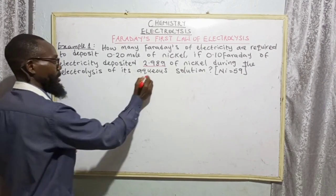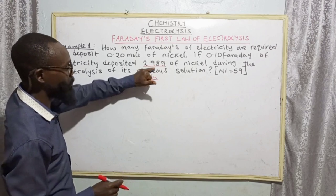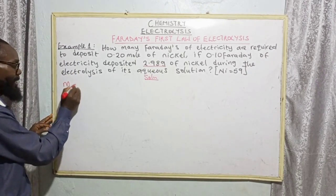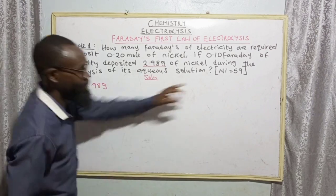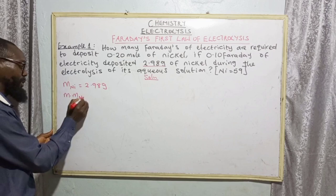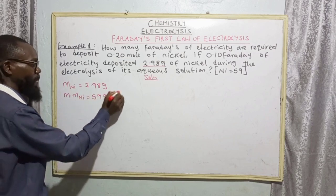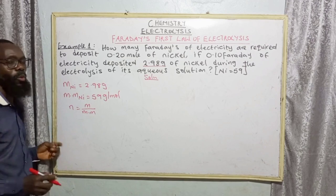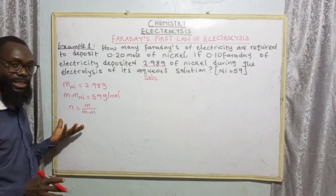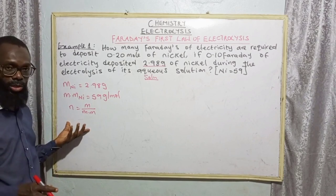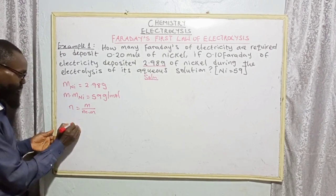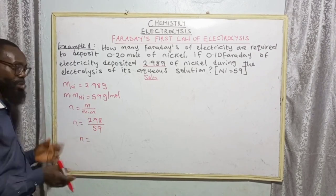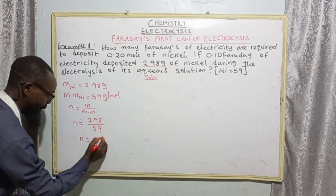From this question, 2.98 grams will be converted into moles. The mass of nickel is 2.98 grams, while the molar mass of nickel is given as 59 grams per mole. Number of moles equals mass over molar mass — this is one of the formulas for calculating mole concepts. So number of moles equals 2.98 divided by 59. Using the calculator, we get 0.05 moles.